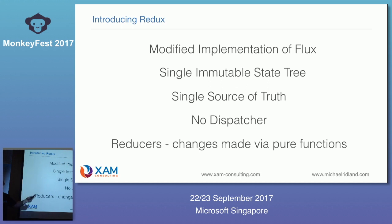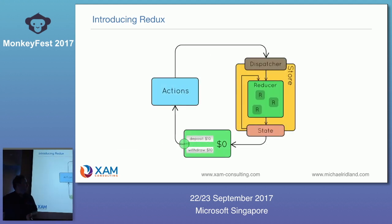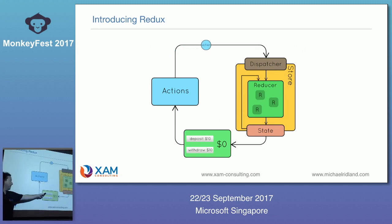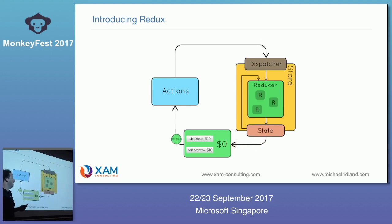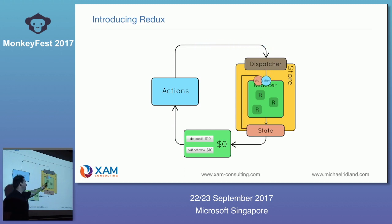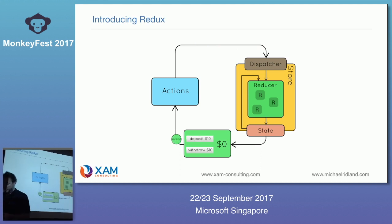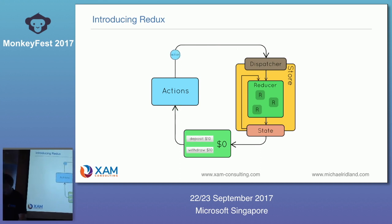Reducers are made of pure functions — reducers are what mutate the data. Here's a little diagram: somebody deposits $10, that creates an action. The action goes into the dispatcher — not a Flux dispatcher, just a dispatch function. The reducers modify the data set and that becomes the new state.